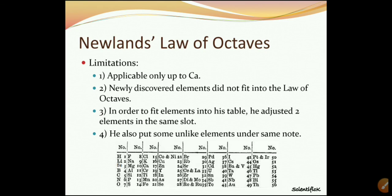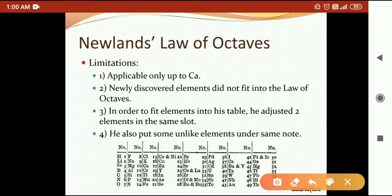Third limitation: in order to fit elements into his table, he adjusted by placing two elements in the same slot. One slot should have one element, but in some places Newland placed two elements in one slot. You can see element number 22 - cobalt and nickel are placed in one slot. And here at positions 34 and 35 as well. So in some places, Newland placed two elements in one slot. That was wrong, because only one element should be put in one slot.